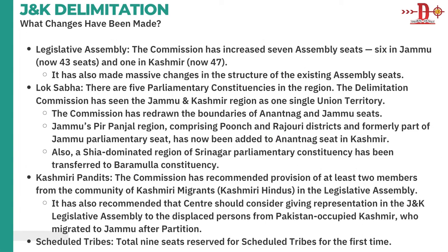Now we understand why delimitation was needed. After the delimitation, the commission increased seven assembly seats for J&K's legislative assembly — six in Jammu and one in Kashmir. This means Jammu's total seats have become 43 and Kashmir's total seats have become 47. The structure of assembly seats has also seen significant changes.